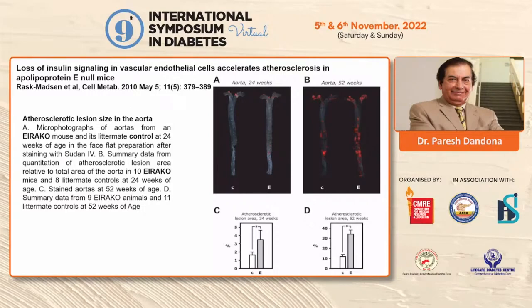Experimental animal data from the Joslin Clinic involved creating an insulin receptor knockout animal. In an ApoE knockout animal — the standard model for producing atherosclerosis — removal of the insulin receptor from the endothelium led to more marked atherosclerosis. The graph shows a marked difference in the area involved in atherosclerosis in these mice, demonstrating that insulin is not only vasodilatory but also anti-atherogenic.